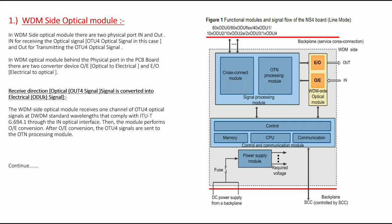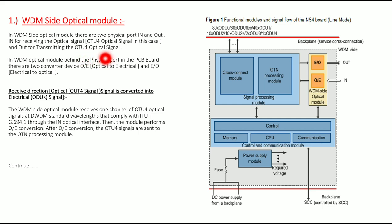Now let's discuss the WDM optical module and how it works. In the WDM side optical module there are two physical ports: in-port and out-port. The in-port is for receiving the OTU4 optical signal and the out-port is for transmitting the OTU4 optical signal. Behind the physical ports on the PCB board there are two converter devices: optical to electrical, and electrical to optical.